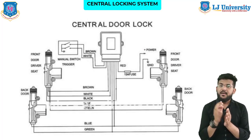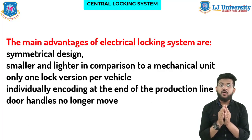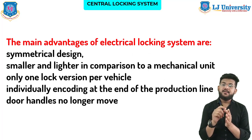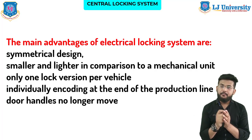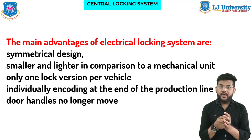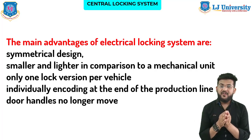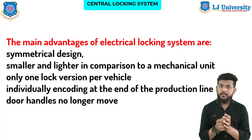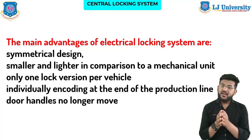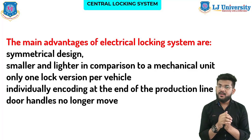In most modern cars, electrical locking systems have replaced mechanical units due to demand for quality and reliability. The main advantages of electrical locking doors are: symmetrical design, smaller and lighter compared to mechanical units, only one lock version per vehicle is needed, and individual encoding at the end of the production line for added security. Door handles no longer move outwards. Supplementary functions like interior lights or status indicators can easily be introduced, and communication with locks takes place via a simple data bus system.